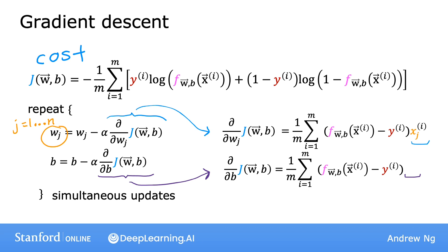So let me take these derivative expressions here and plug them into these terms here. This gives you gradient descent for logistic regression.